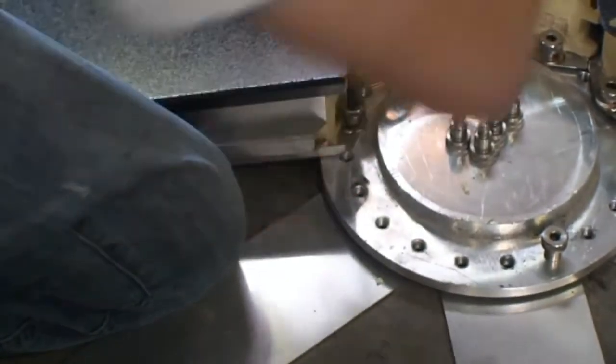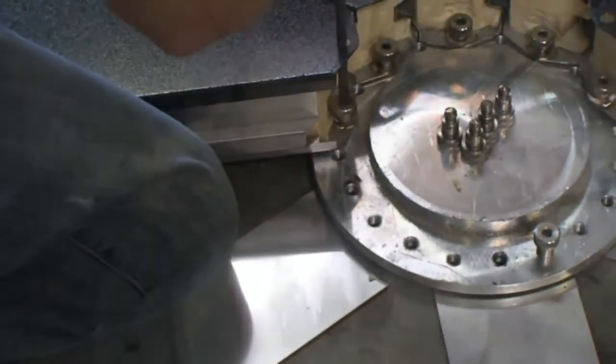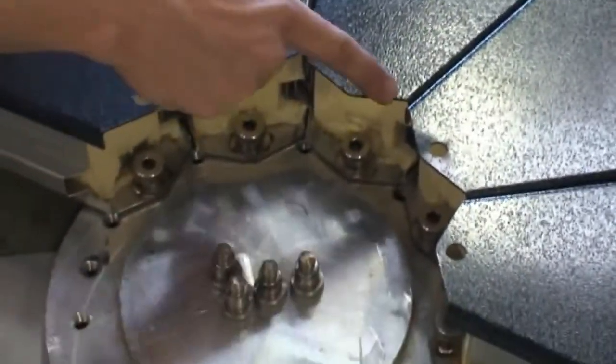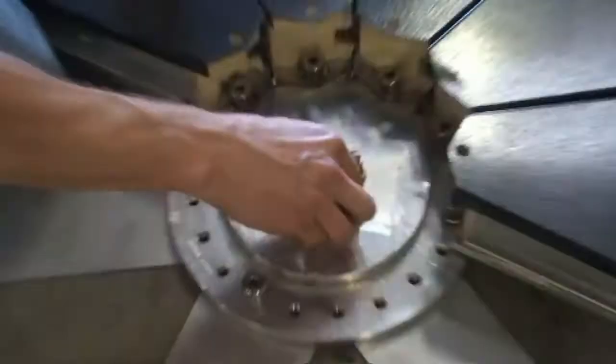Now when you have about five of these in you want to make sure the alignment is proper. The way you're going to do this and adjust this is by putting a bolt across.